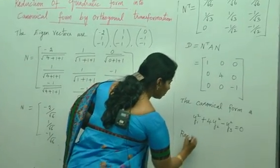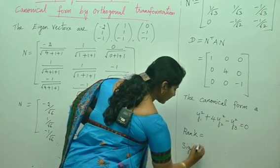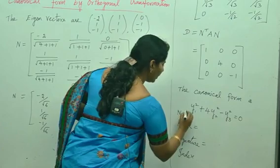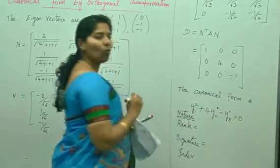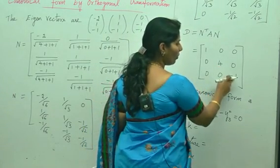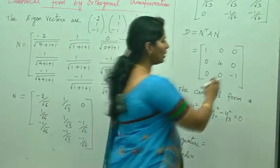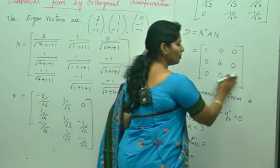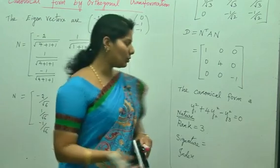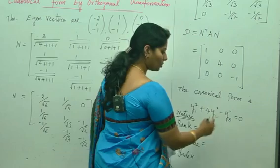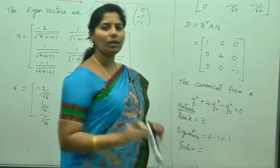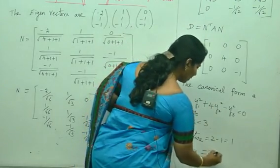For the nature of roots, we write the rank, index, and signature. Rank is the number of non-zero eigenvalues (positive plus negative), so with eigenvalues 1, 4, and minus 1, the rank is 3. If one eigenvalue were 0, rank would be 2. Signature is the difference between the number of positive and negative square terms: 2 minus 1 equals 1. Index is the number of positive square terms only, which is 2. This is the final answer.